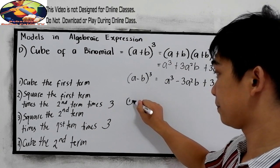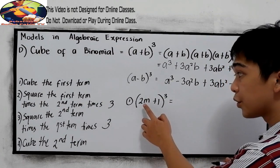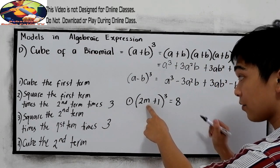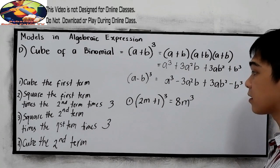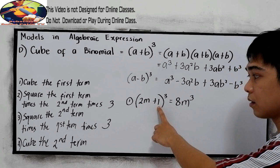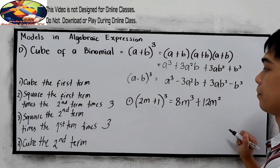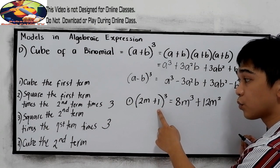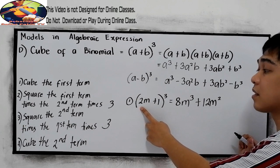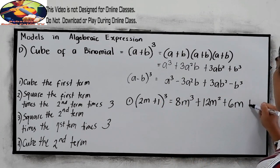Now let's try this example. Let's say we have (2m + 1) cubed. Cube the first term: 2 times 2 times 2, which is 8m cubed. Next, square the first term: 2 squared times 1, that is 4, times 3 — positive 12m squared. Then square the second term: 1 squared is 1, times the first term 2, times 3 — 2 times 3 is 6m. And cube the second term: plus 1.